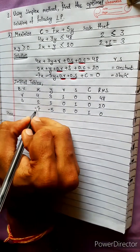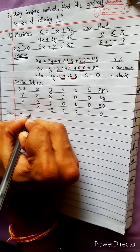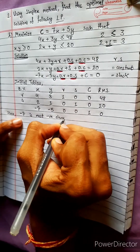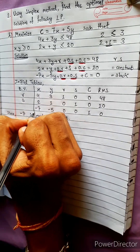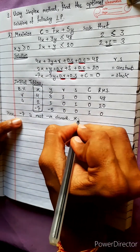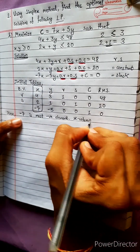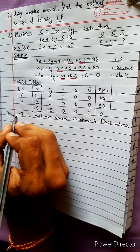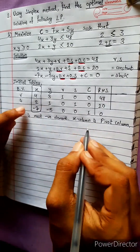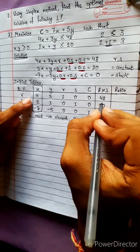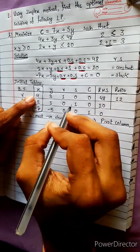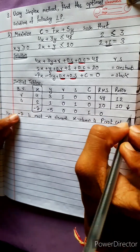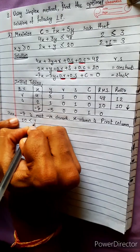Minus 7 is the most negative element, so minus 7 determines the pivot column. The x-column is the pivot column. 48 divided by 4 is 12, and 20 divided by 2 is 10. 10 is smaller than 12.